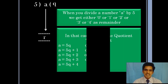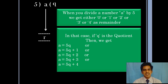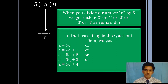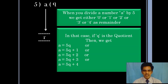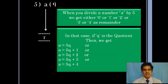When the divisor is 5, the number a can be written as 5q when the remainder is 0, or 5q plus 1 when the remainder is 1, or 5q plus 2 when the remainder is 2, 5q plus 3, or 5q plus 4. These are all the possible forms.